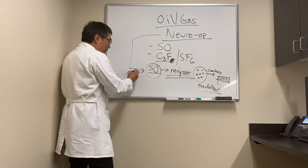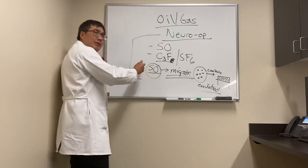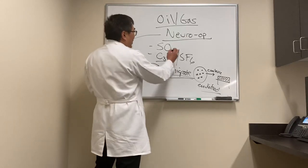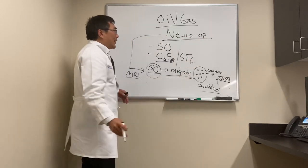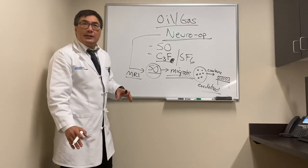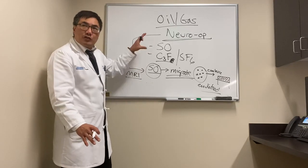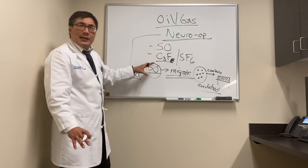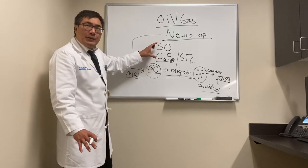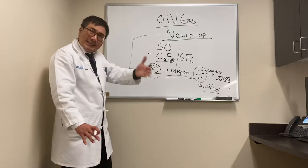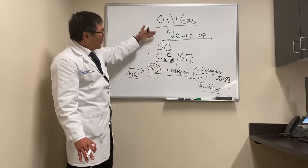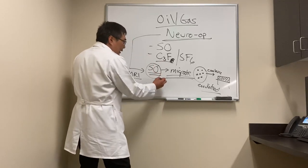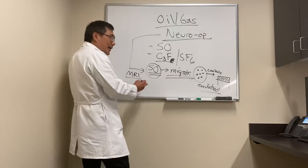When there is vision loss after silicon oil placement, we want to perform an MRI scan to assess the migration pattern. Normally, lack of recovery after a detachment doesn't require neuro-op — issues like recurrent retinal detachment, vitreous hemorrhage, keratopathy, glaucoma, or hypotony are visible causes. In neuro-op, we're dealing with unexplained vision loss — things we can't see — so if there's no migration on MRI, we look further.